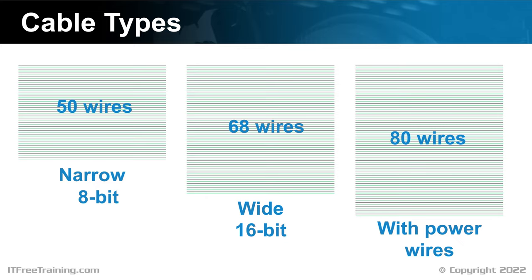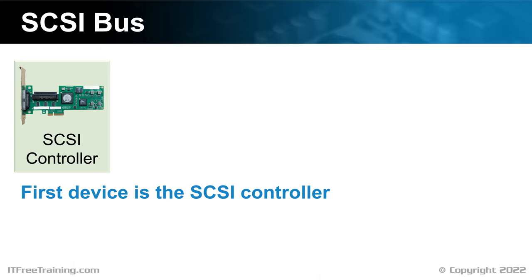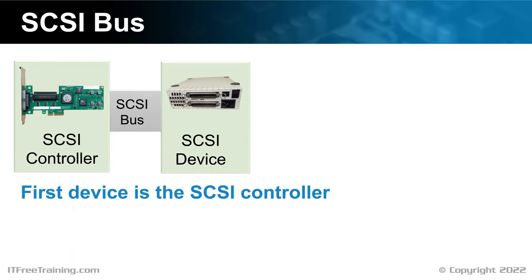Before I look at the issues you may have if you combine different types of SCSI, I will first look at how the SCSI bus works. SCSI allows a number of SCSI devices to be connected together which utilize the same bus. The first device on the bus is the SCSI controller. This is different to other storage devices like SATA, where the controller does not count as a device. In order to use the SCSI controller, a SCSI device can be connected to it. The SCSI device can be external to the computer or inside the computer itself. For example, SCSI RAID devices in servers are often built into the server itself. Additional devices are connected in a daisy chain.